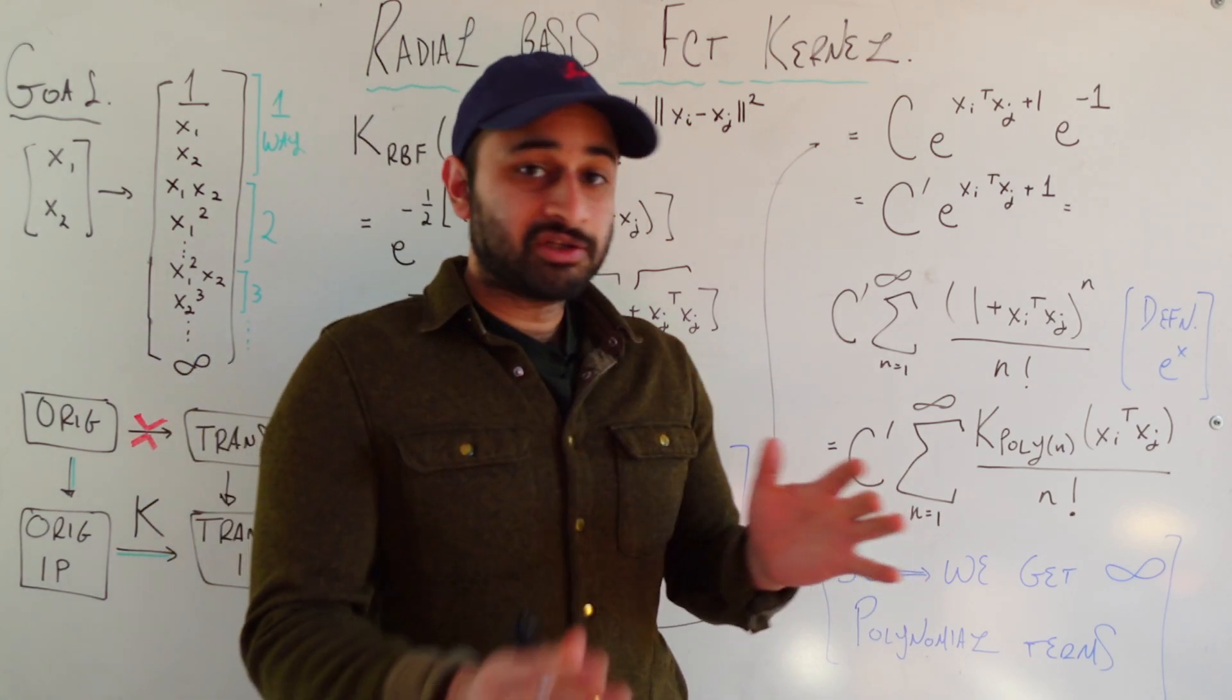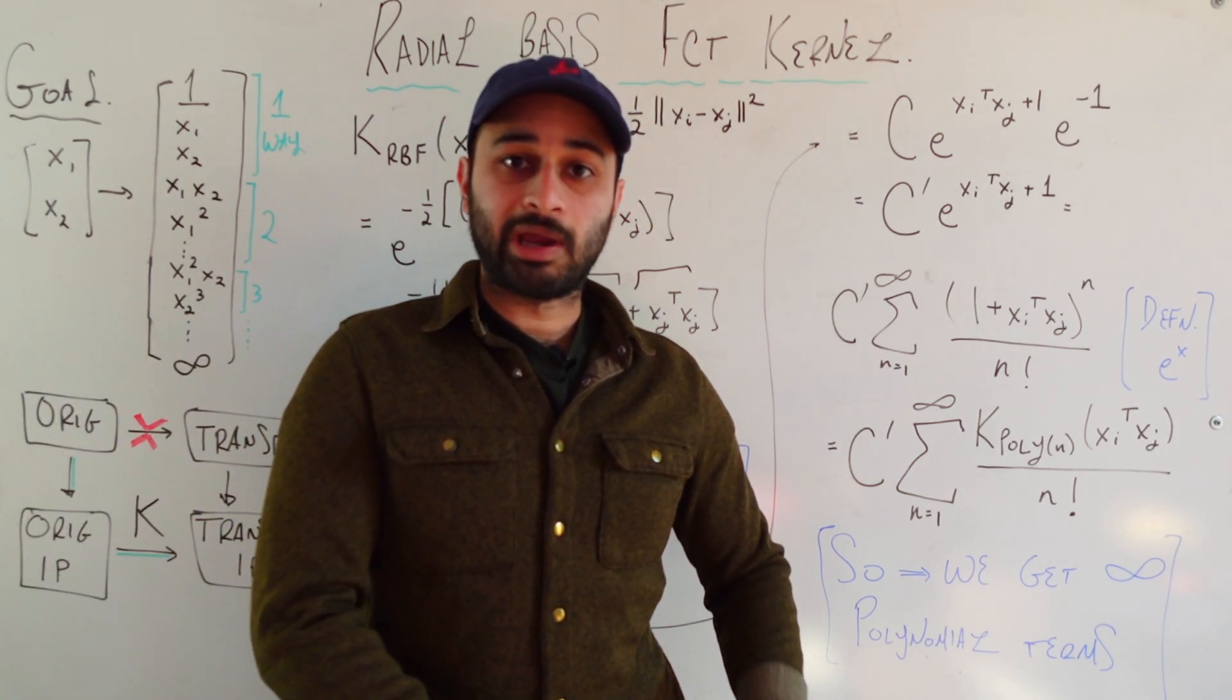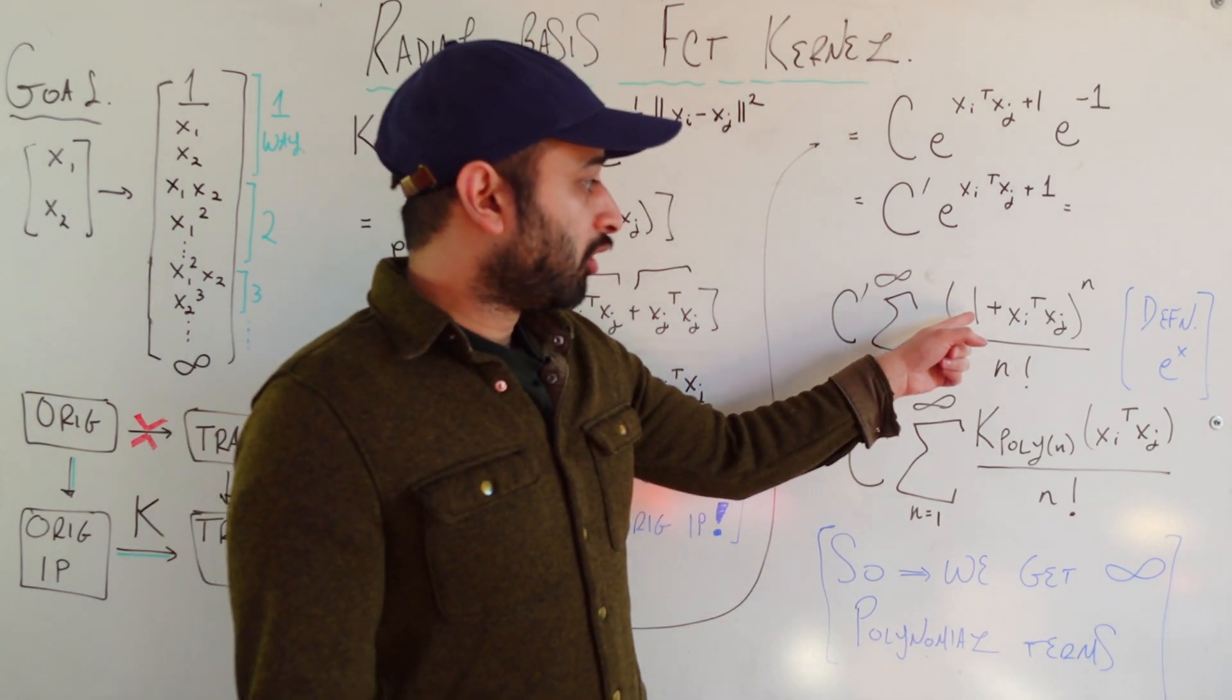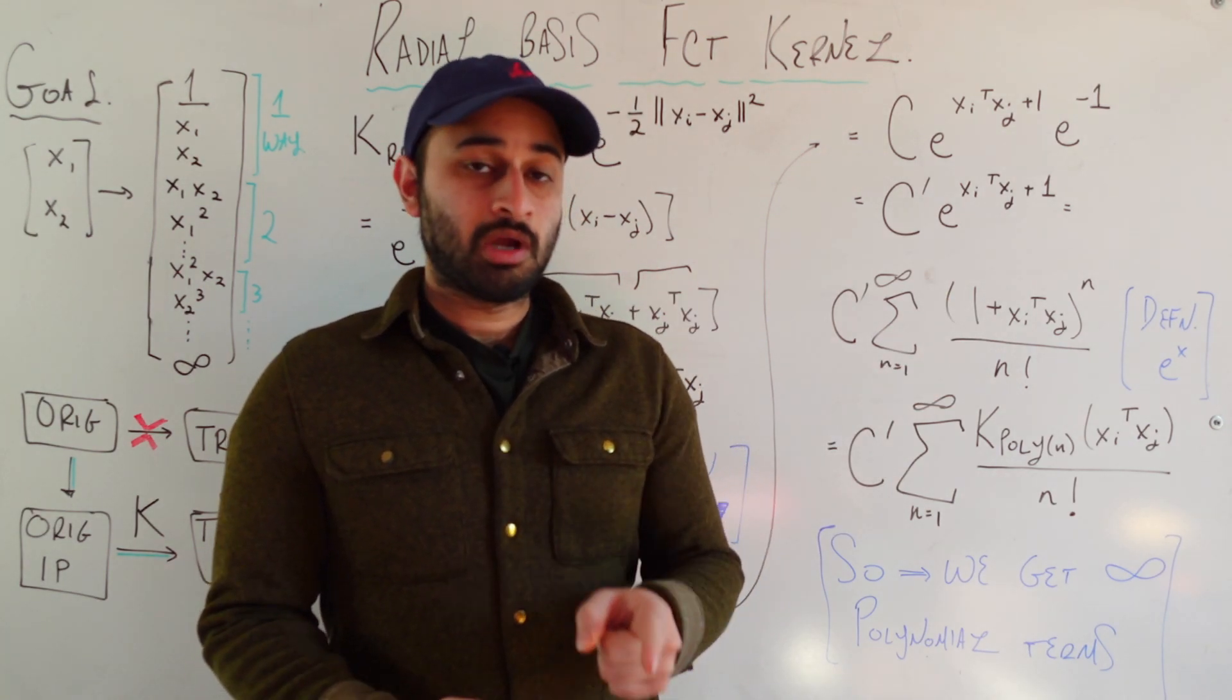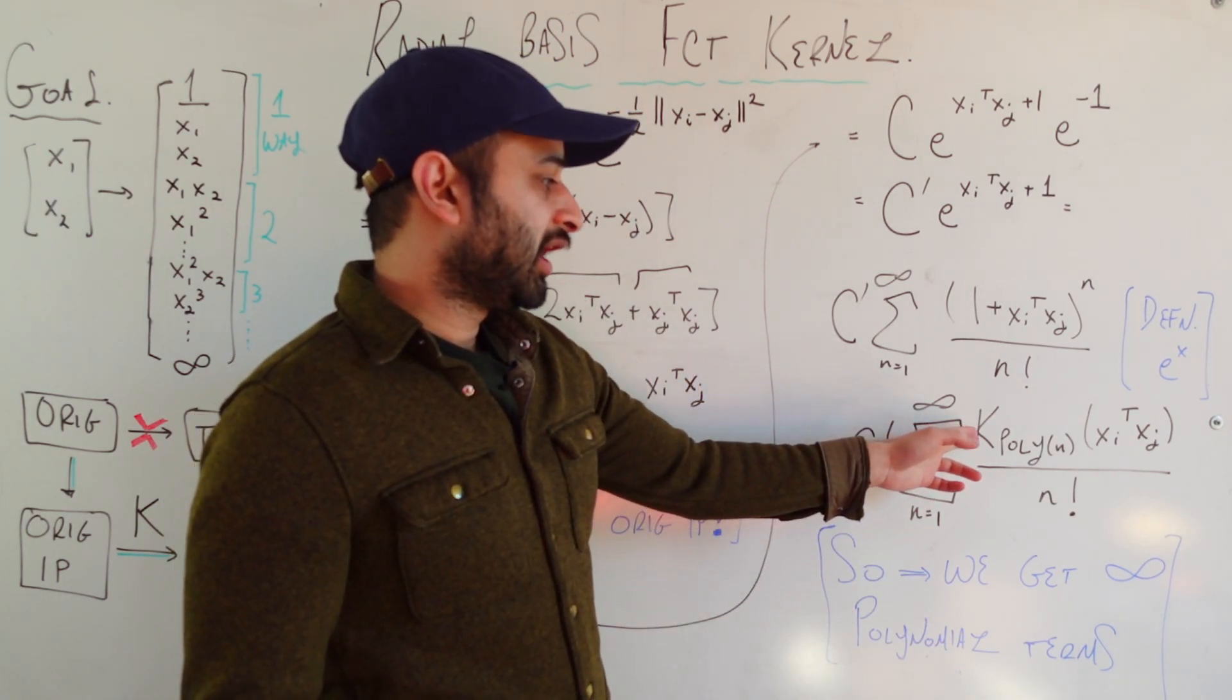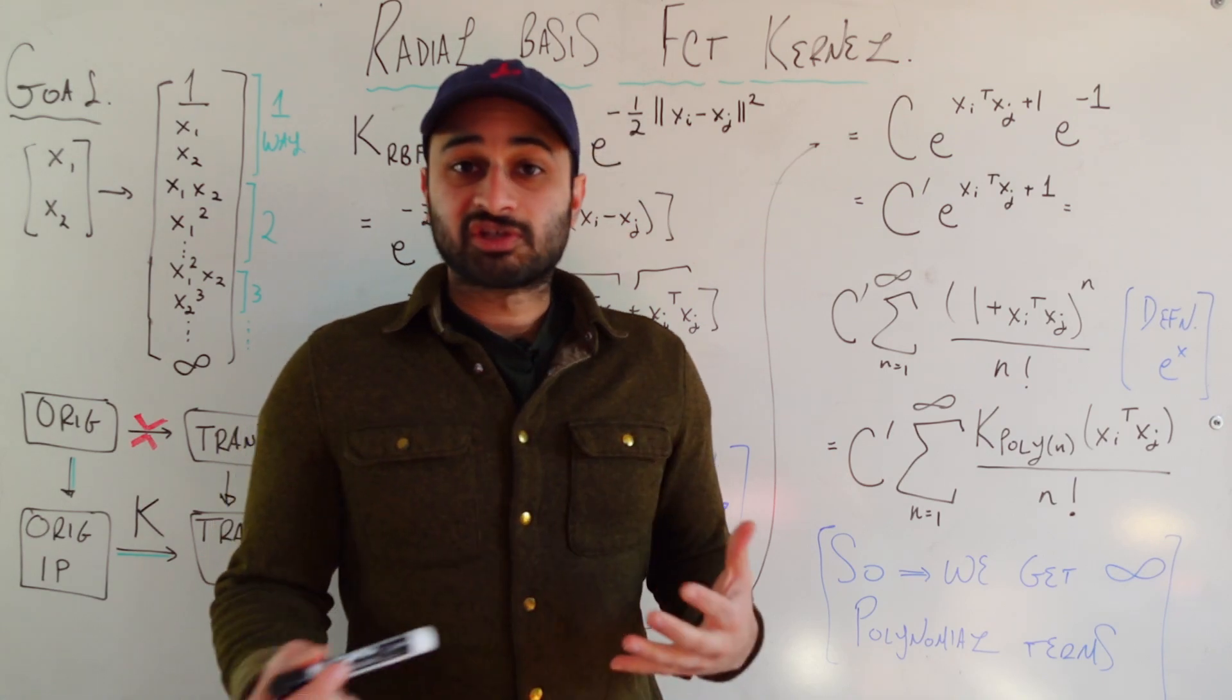And now the last thing to note, which is going to tie this whole thing together, is that if you think back to our original kernel's video, which is linked below by the way, I highly recommend or require actually watching that to understand this pretty well. We see that this numerator here, one plus xi transpose xj to the power of n is exactly the definition of our polynomial kernel of degree n. So if you go back to that video you'll see that's exactly the definition. And so we can write k poly degree n of xi transpose xj, and of course that's all divided by n factorial. What does this mean?